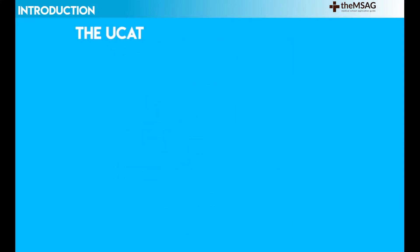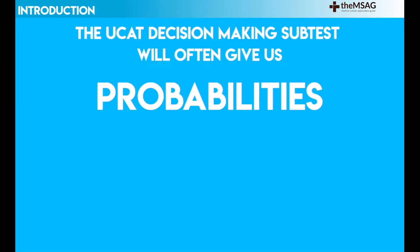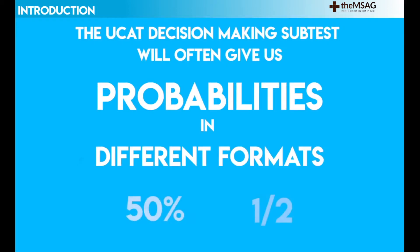The UCAT decision-making subtest will often give us probabilities in different formats, hoping to confuse us as to which is more likely than the other. Having worked through this lesson, you should be confident in your ability to avoid such traps.